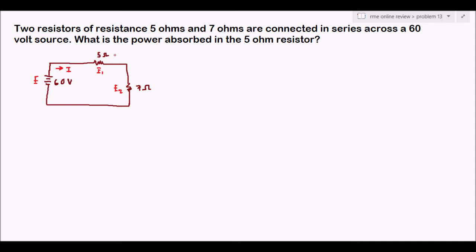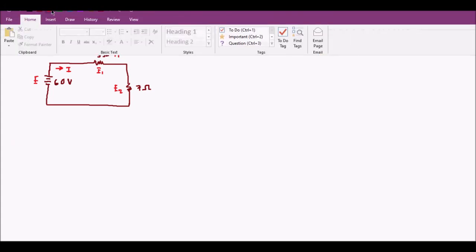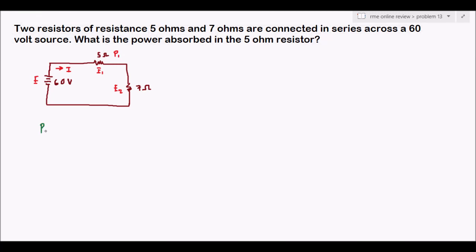We need to find the power P1 at the 5 ohm resistor. P1 equals E1 times I1. There is a shorter way and a longer way to solve this. We'll use the shorter way first.